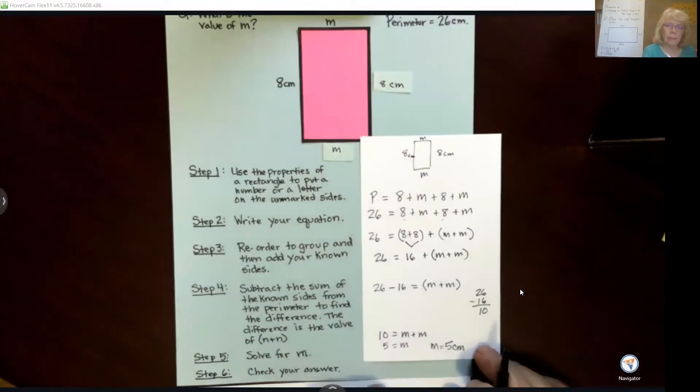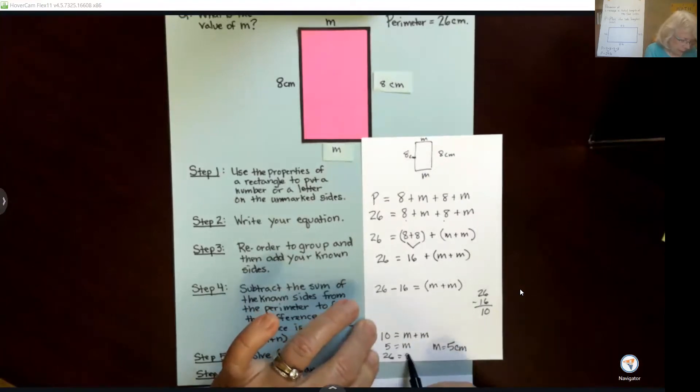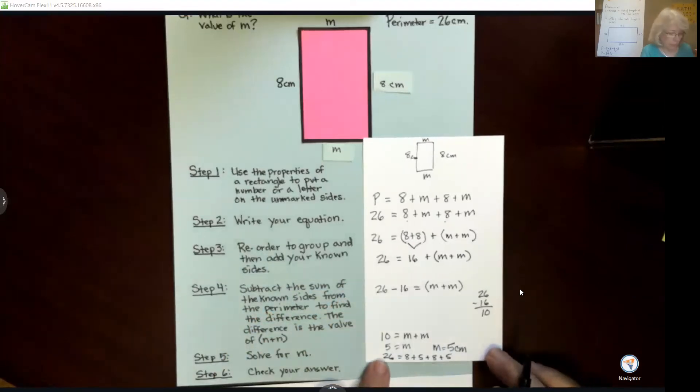Now my last step is to check my answer. So I can check my answer by adding and seeing is 26 equal to 8 plus 5 plus 8 plus 5, and if I add those all together, I see that they do equal 26.